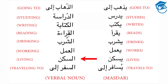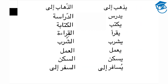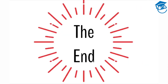Yaskunu — he lives. The verbal noun or masdar: al-sakan. Yusafiru ilah — he travels to. The verbal noun: al-safar ilah — traveling to. And this brings us to the end of our video. Remember that any time you learn a new verb, make sure that you learn the masdar that goes with it. Ma'a salama.